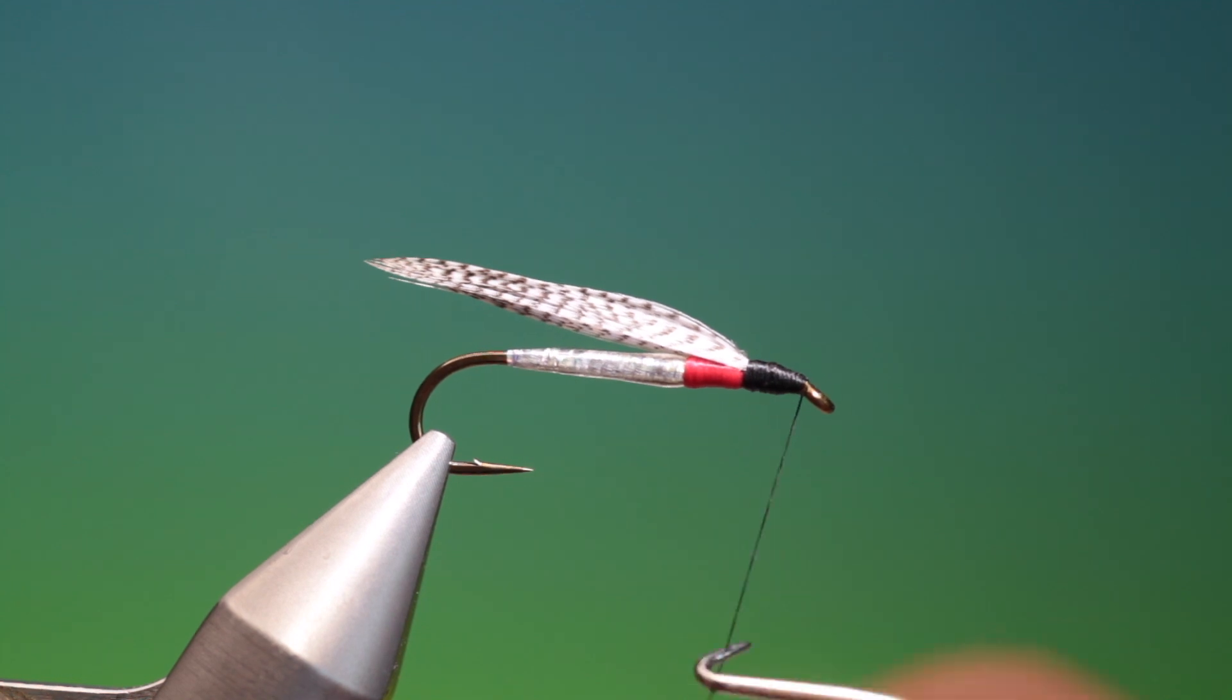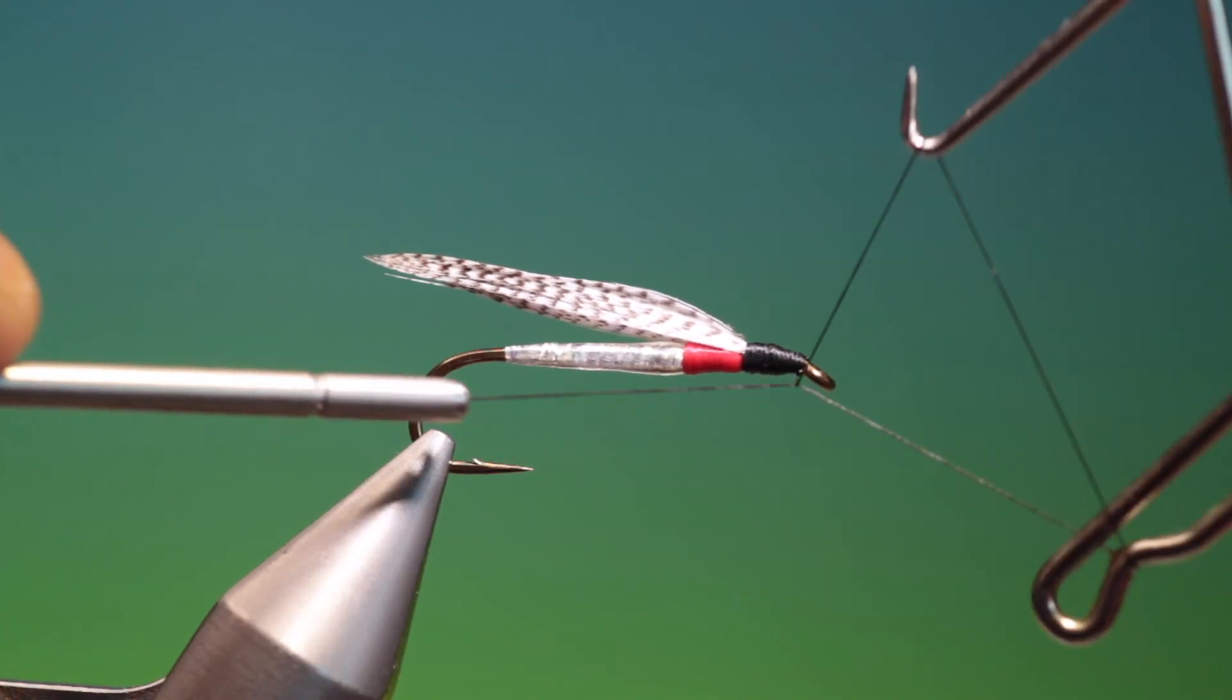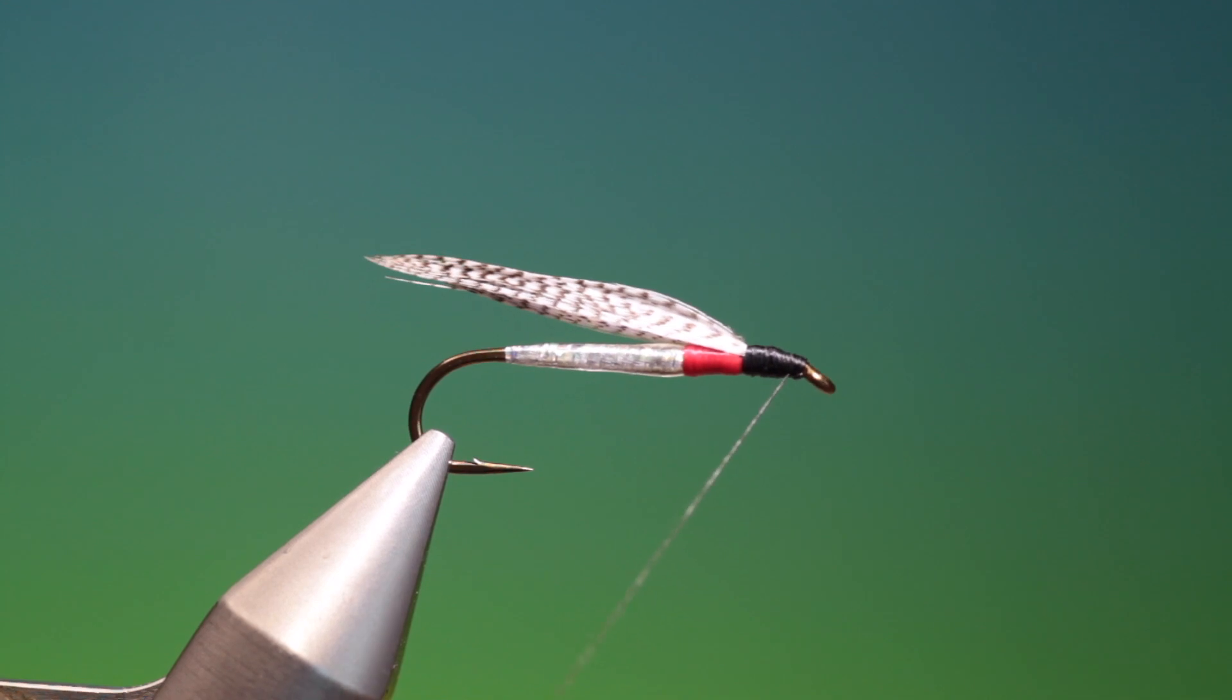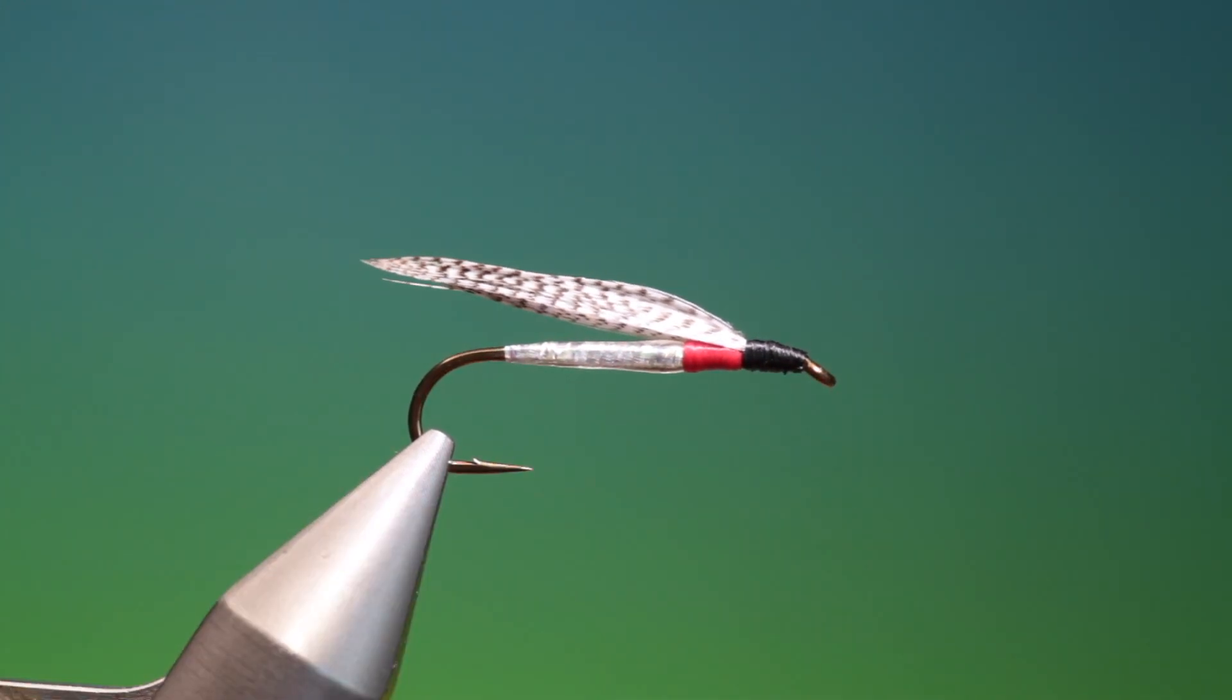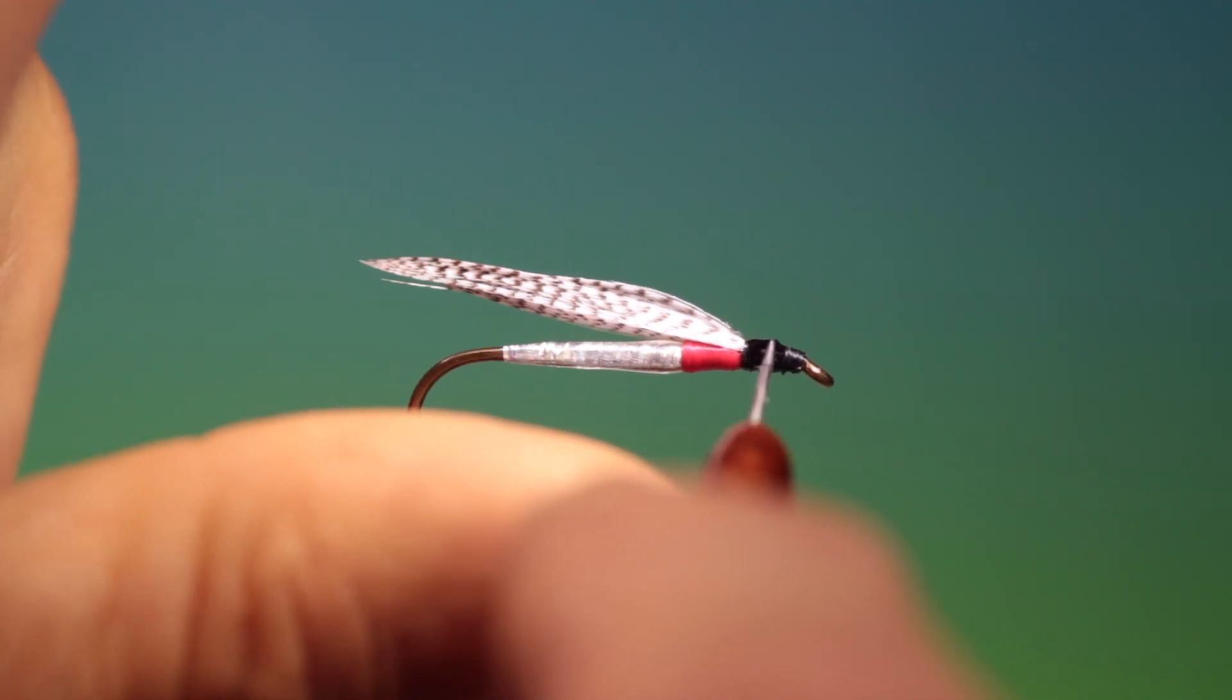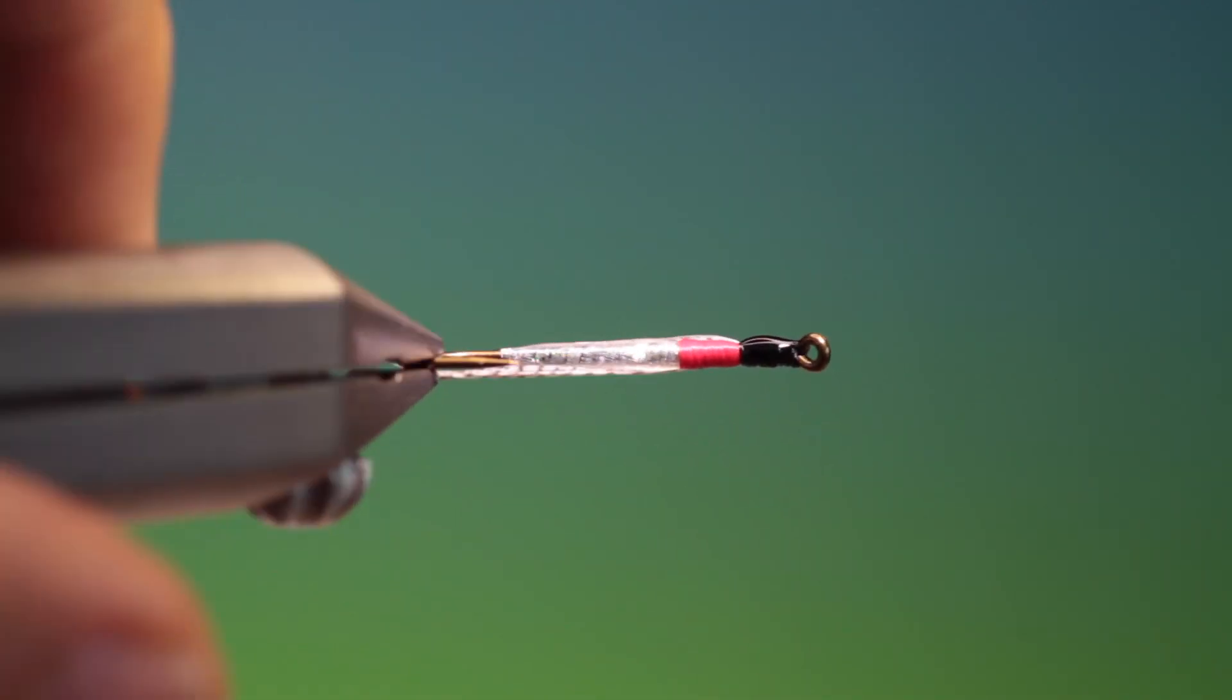Take our whip finisher and we'll just put a couple of whip finishes in there. And we'll trim off tying thread. Take a drop of UV resin. And we'll just give the head a coat. We want a very shiny black head on this.